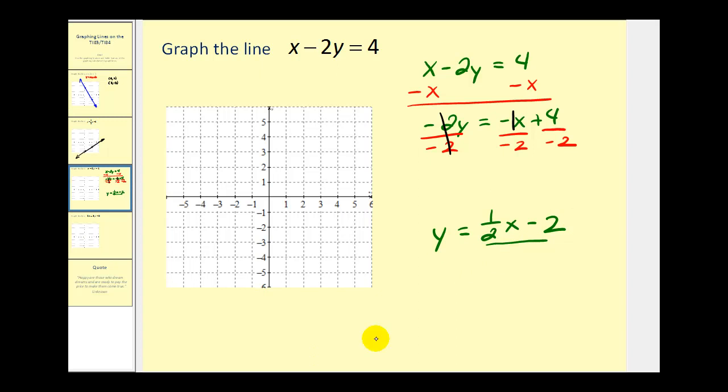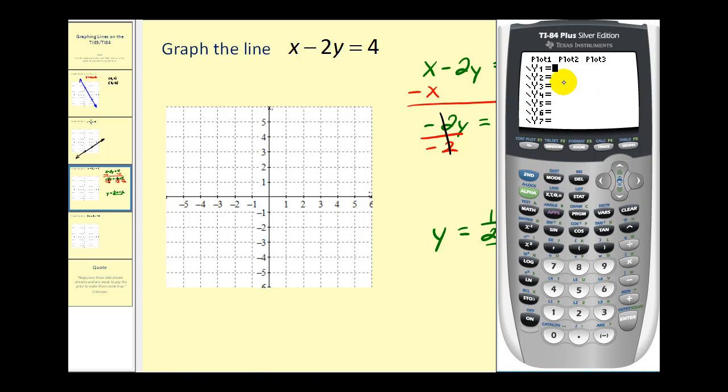Let's go ahead and try it. Clear this line. We had y equals one-half x minus two. So in parentheses, we'll have one divided by two times x minus two. Press graph. Again, there's our line, which is nice, but it doesn't give us exact points to plot on the coordinate plane.